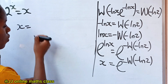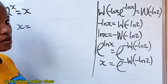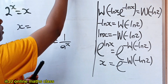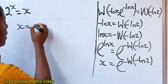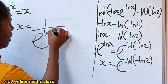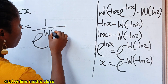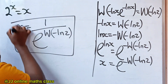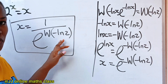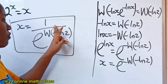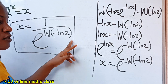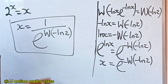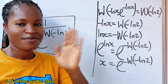So from here, x is equal to... To remove this negative sign, remember that a to the power of minus x equals 1 over a to the power of x. So I will write x equals 1 over e to the power of W(minus ln2). Now, this is the value of x. But if you try to compute the Lambert W function of minus ln2, you cannot get a real value — it has a complex value. Thank you so much for watching. See you in my next video.